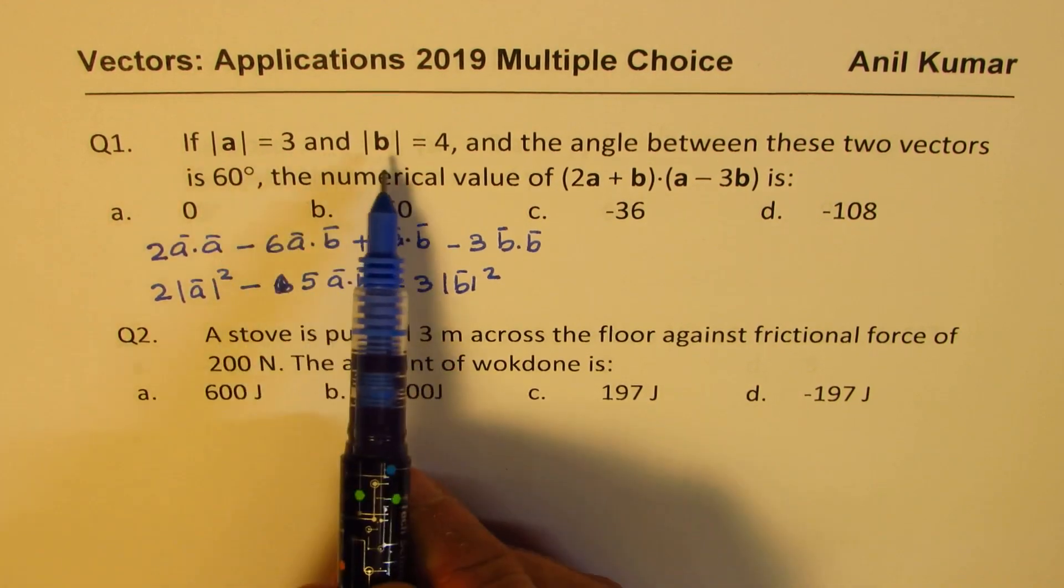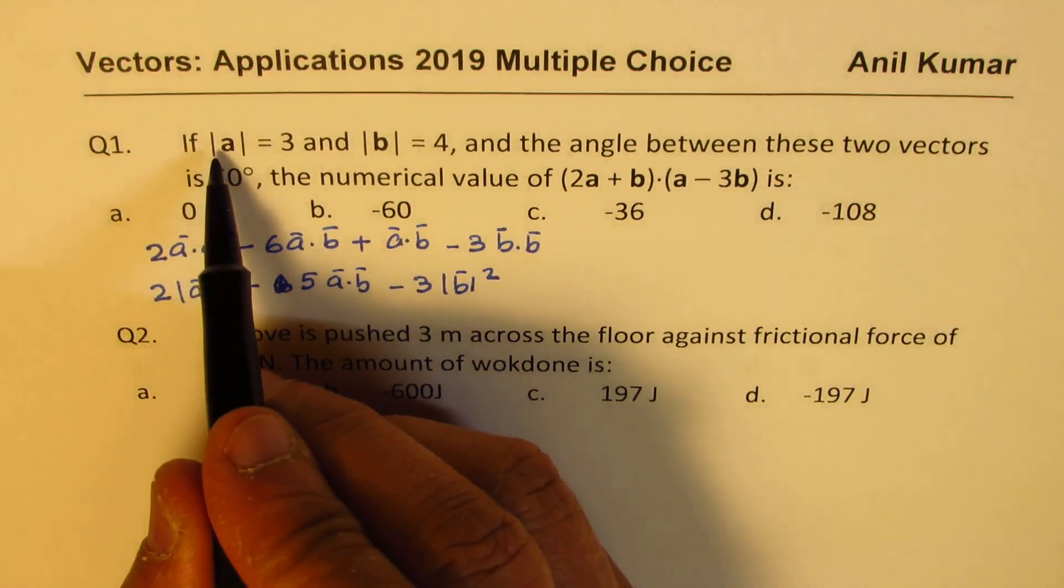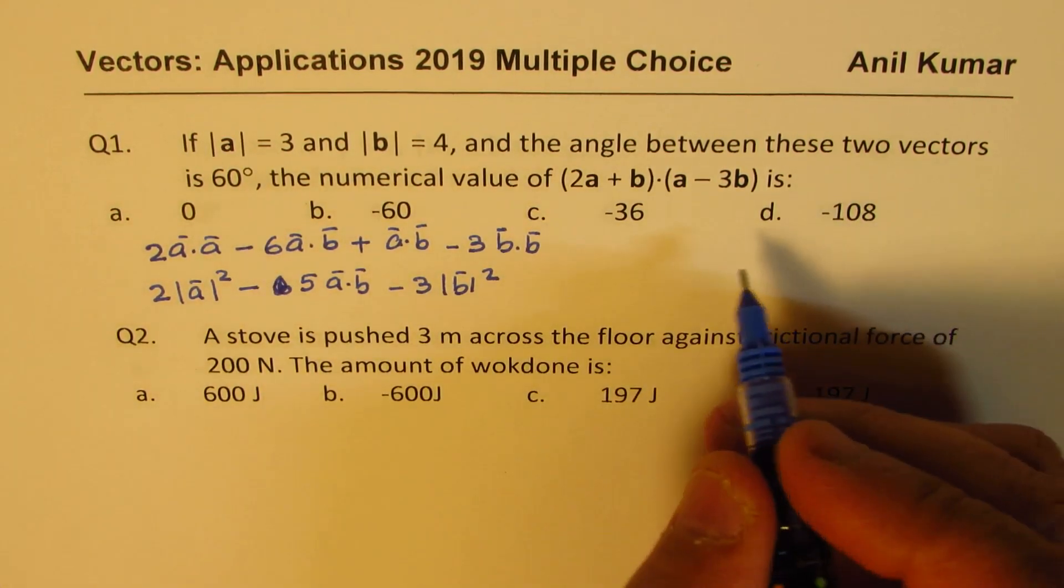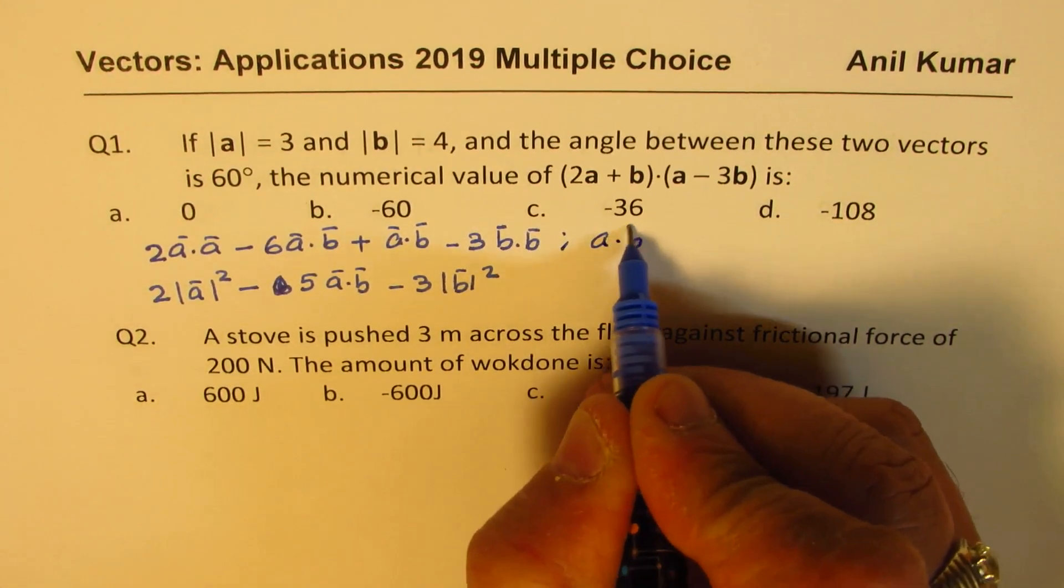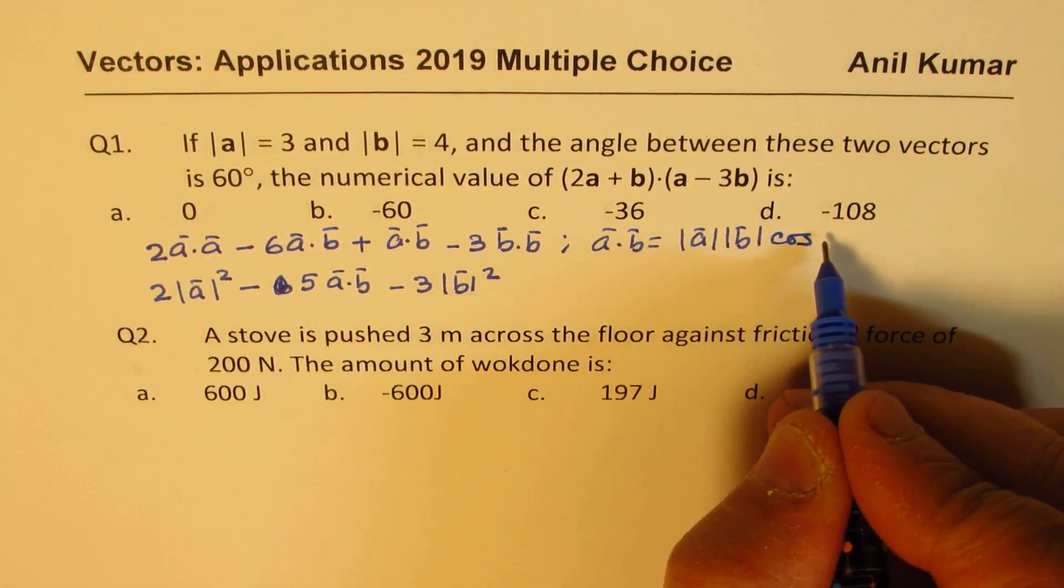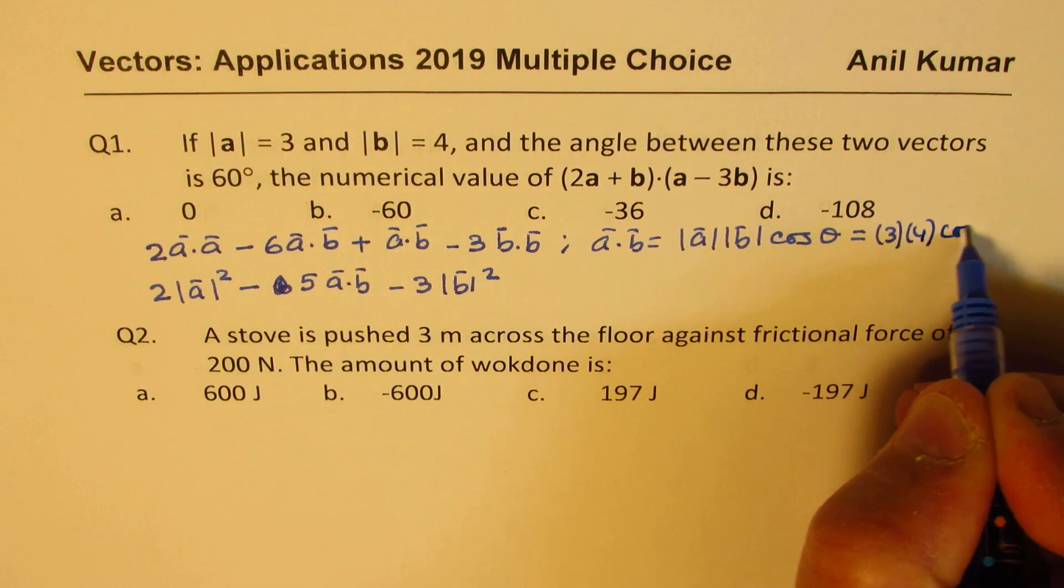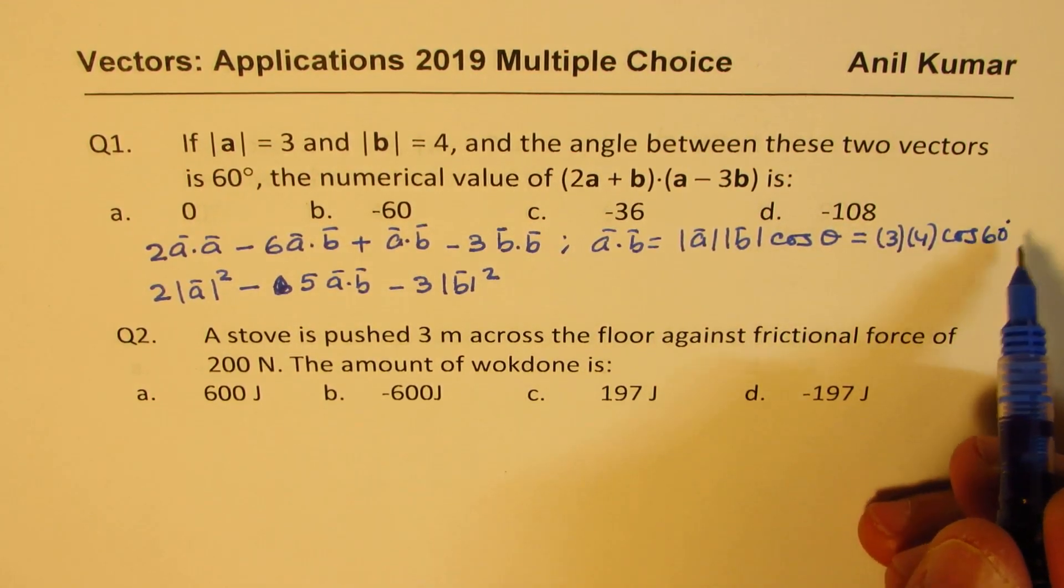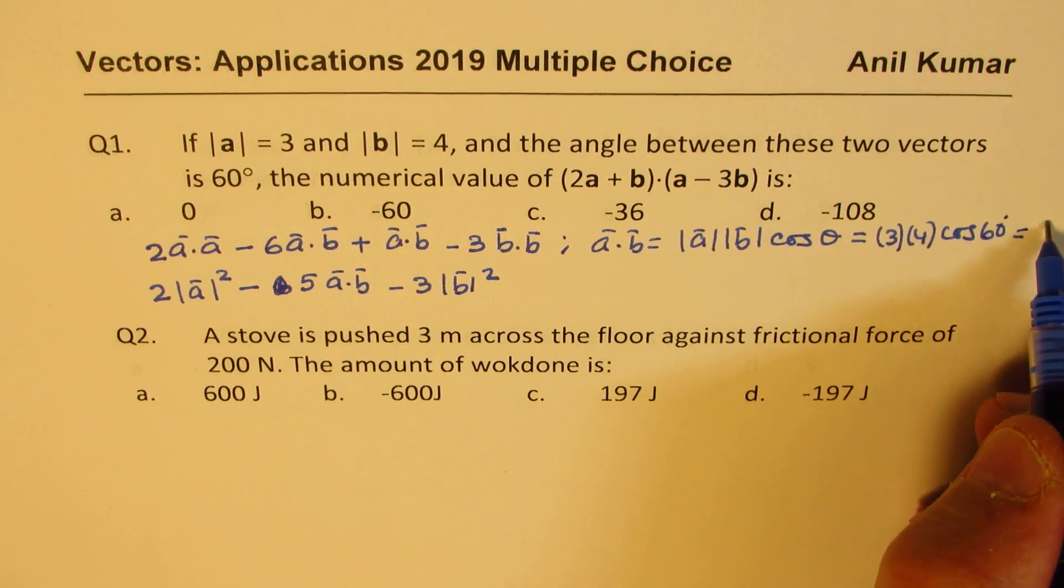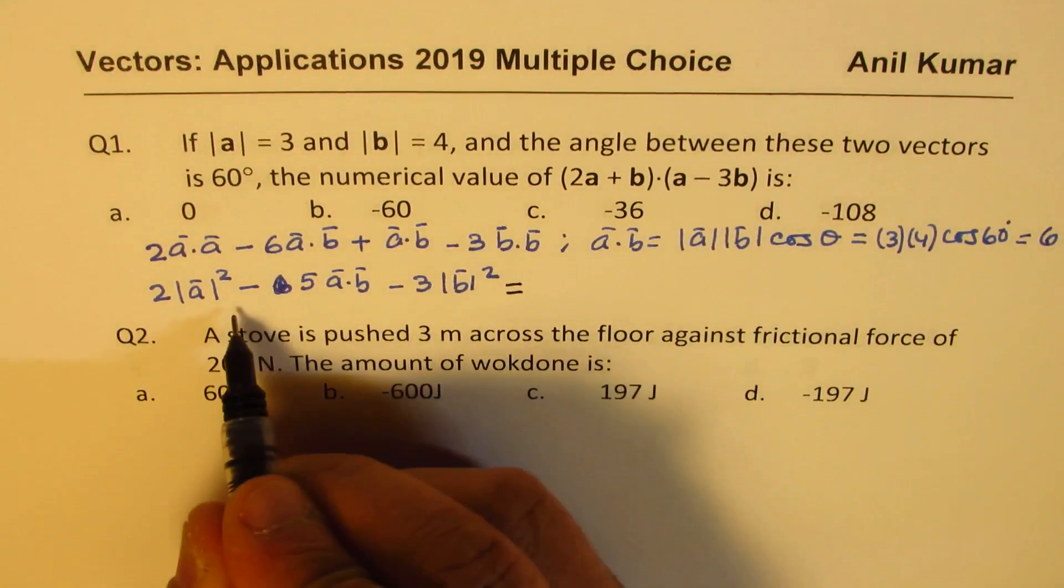Now you are given the information to find the dot product. So we can do that on the side. A dot B is basically magnitude of A times magnitude of B times cos of the angle between them, which is 60 degrees. So 3 times 4 times cos of 60 degrees. And cos of 60 degrees is half. So that gives you 12 and half will be 6. So A dot B is 6 for you.